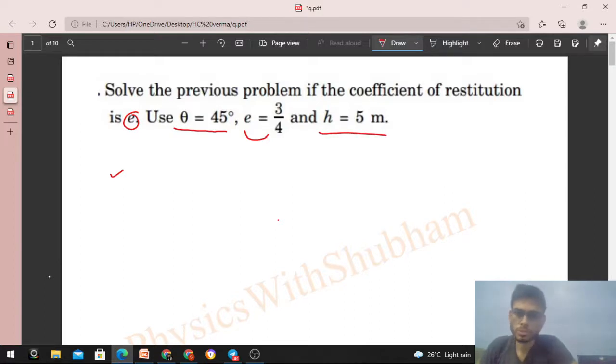Fine. So this is the first part we have discussed in a lot of detail. We have already discussed in the previous video that the formula was 4h sin θ e(1+e), right?